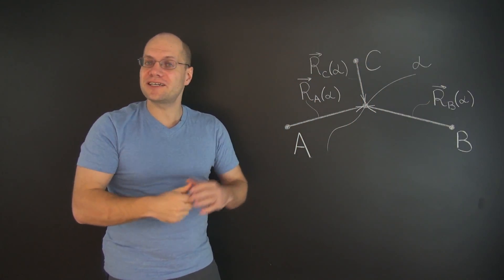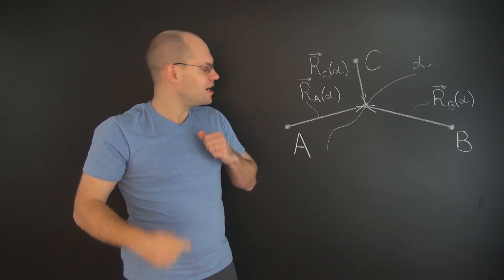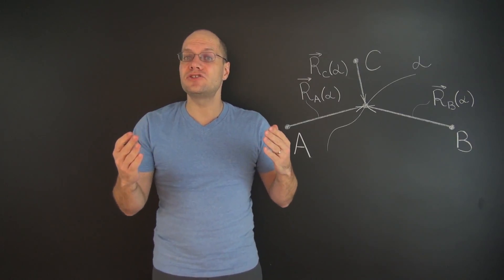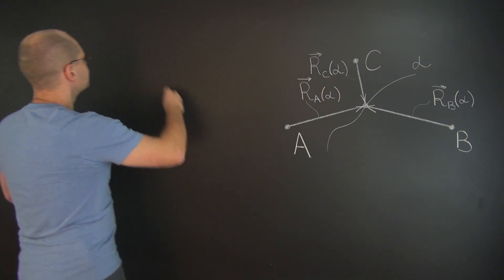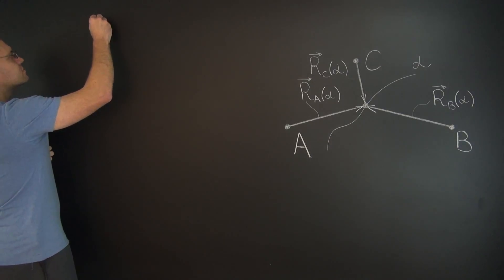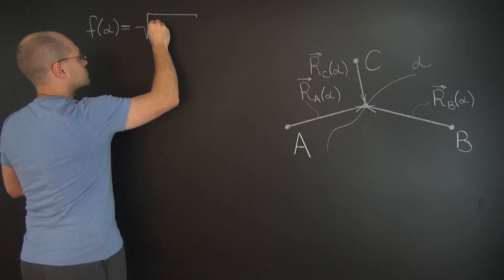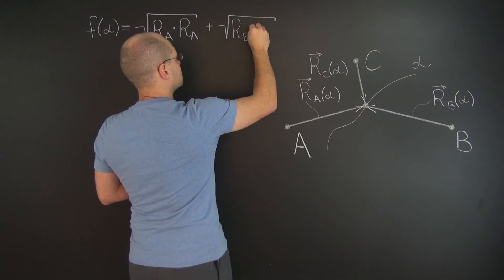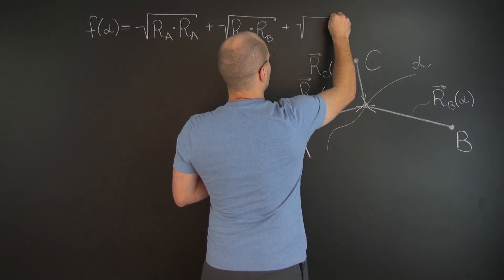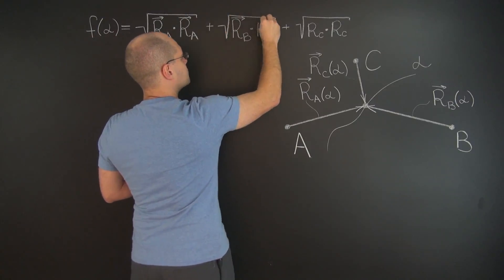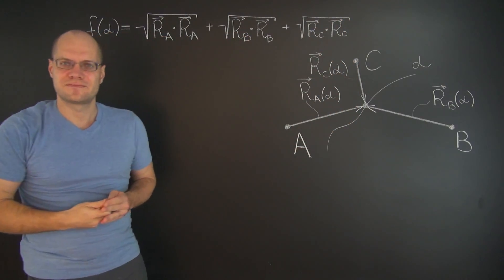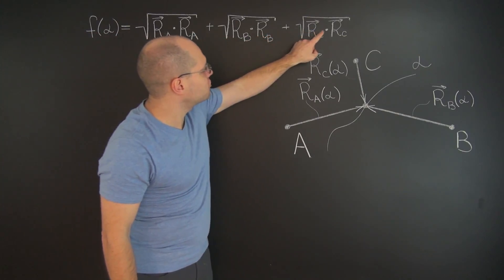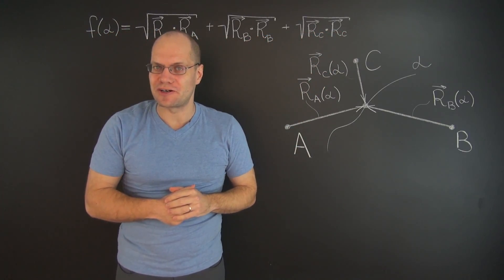And each one of them is a function of the parameter alpha. And so the objective function is the sum of the lengths of these three vectors. And so it is too a function of alpha. You will notice that I dropped the argument alpha from each of the terms just to keep the expression shorter.